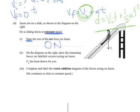Part two. On the diagram on the right, draw the remaining forces as labelled vectors acting on Jason if Fg has been drawn for you. So there's going to be two remaining forces. There is a reaction force or a normal force on the surface of the slide. And then there is a friction force. And the friction force should be quite small in comparison to the normal force and the force due to gravity.